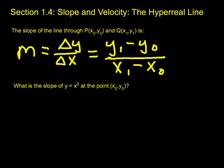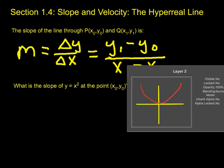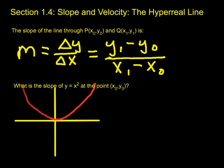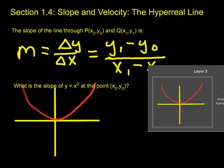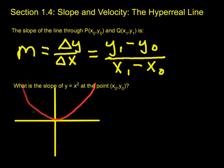So what is the slope of the curve y equals x squared at the point (x₀, y₀)? You should be a little concerned by the idea of a slope, because lines have slopes. Curves do not — the curve y equals x squared is a parabola. So what would be the slope of it? Slope has to do with lines.